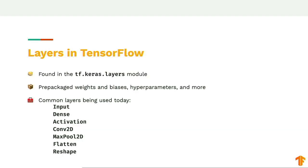A model consists of layers. The tf.keras.layers module comes with common layers: Input for taking in the X value; Dense, which is the synonym for a fully connected layer; Activation — you can either specify the activation function inside the Dense block or use a separate Activation layer; Conv2D for 2D convolution; MaxPool2D for maximum pooling in 2D space; Flatten, which squashes an n-dimensional matrix into a vector; and Reshape, a special layer that reshapes an incoming vector into a target shape.